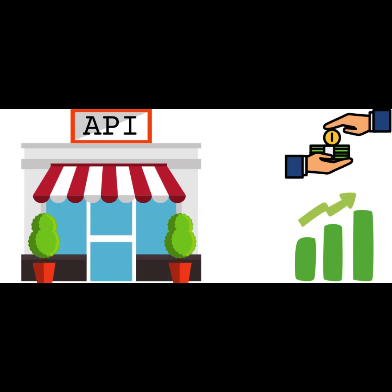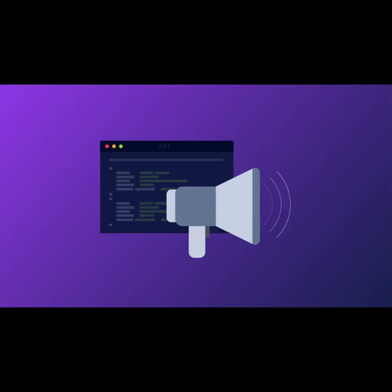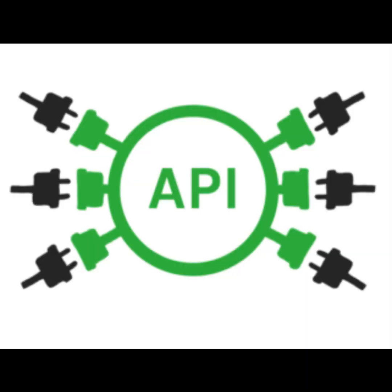Step four: list and describe the product. Create product listings with detailed descriptions, documentation, sample code, pricing, and usage examples. Make it easy for developers to understand its value. Step five: market your developer tool or API through online advertising, content marketing, developer forums, and relevant directories. Demonstrate its use through tutorials and code examples. Step six: provide developer support for integration, troubleshooting, and inquiries.